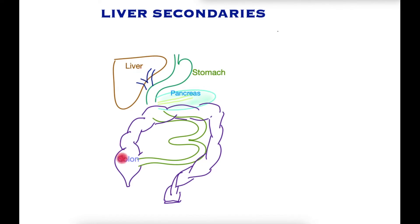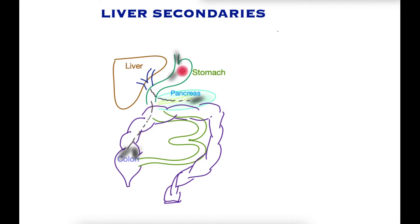All of the blood from these organs is channeled through the liver through the portal vein. Hence cancers arising in the colon, the pancreas, the stomach, and the gullet are very likely to spread to the liver by detaching cancer cells and traveling in the portal circulation towards the liver, finding a home there.